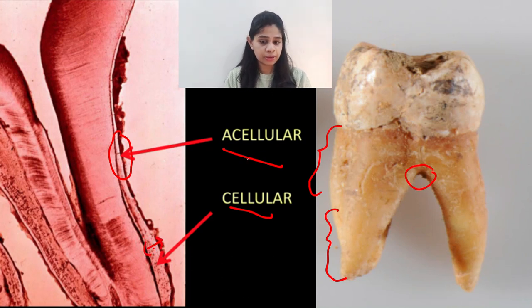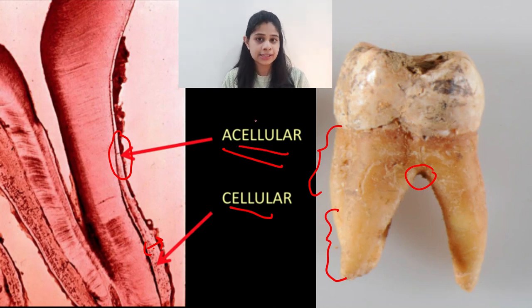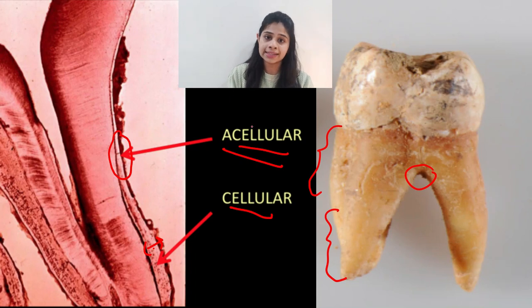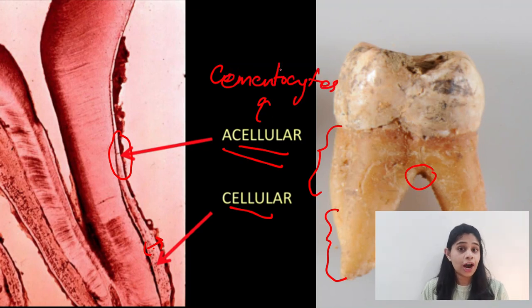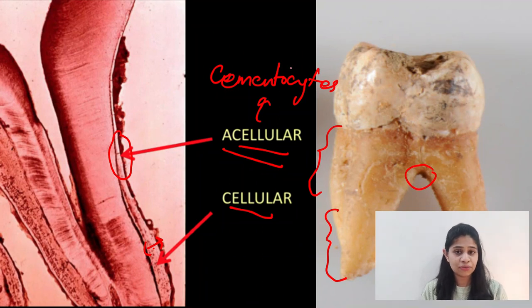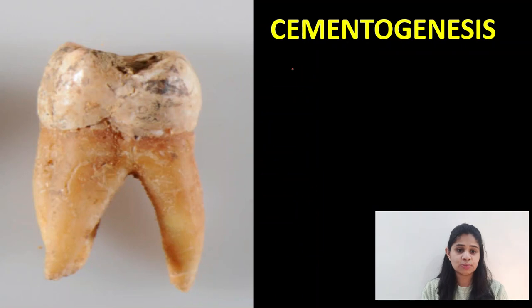The common term here is 'cellular.' Acellular does not contain cells whereas cellular contains cells — specifically, we are talking about the presence of cementocytes. To understand where exactly these cementocytes come from, let's go back to the development of cementum, or the process of cementogenesis.